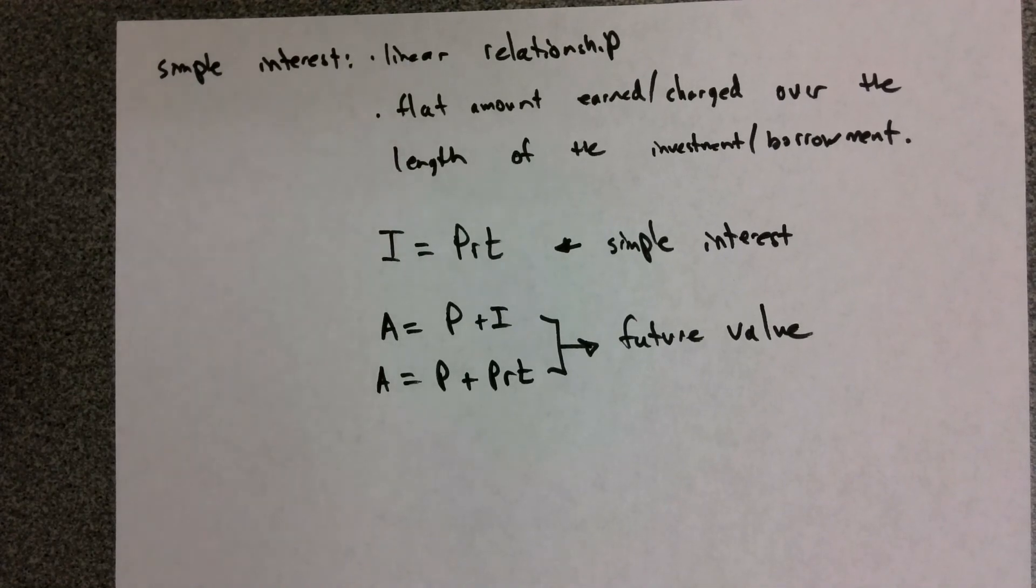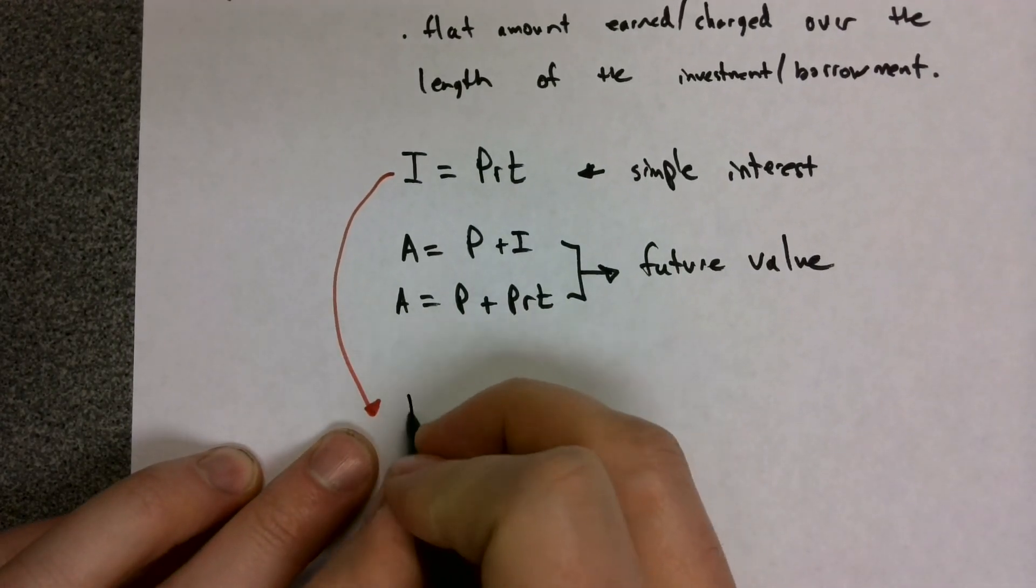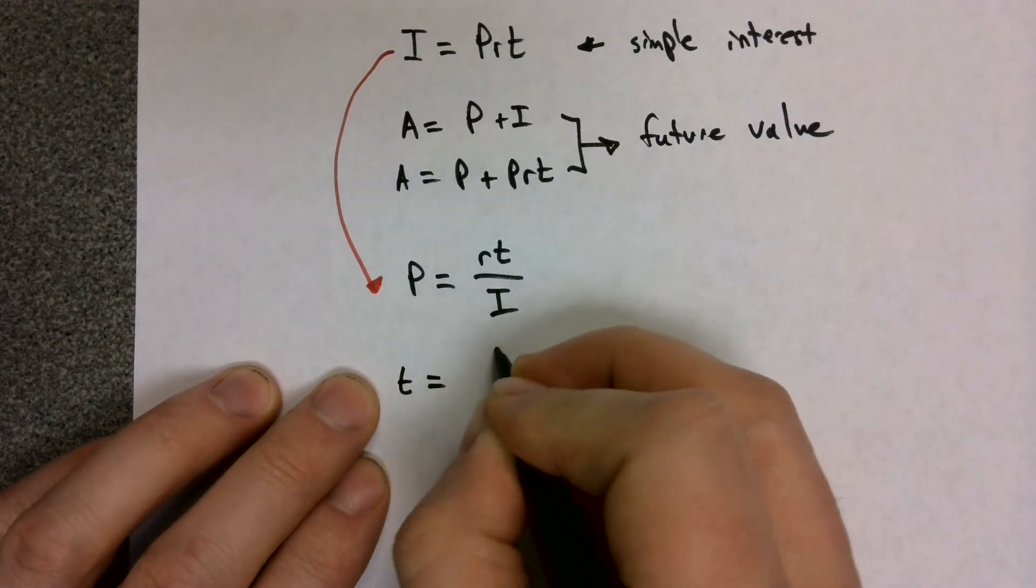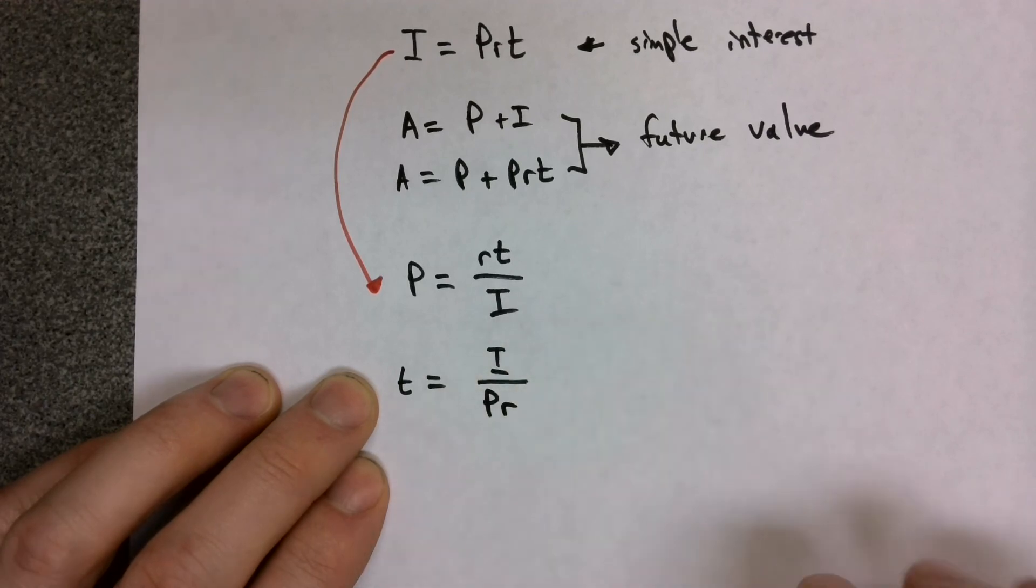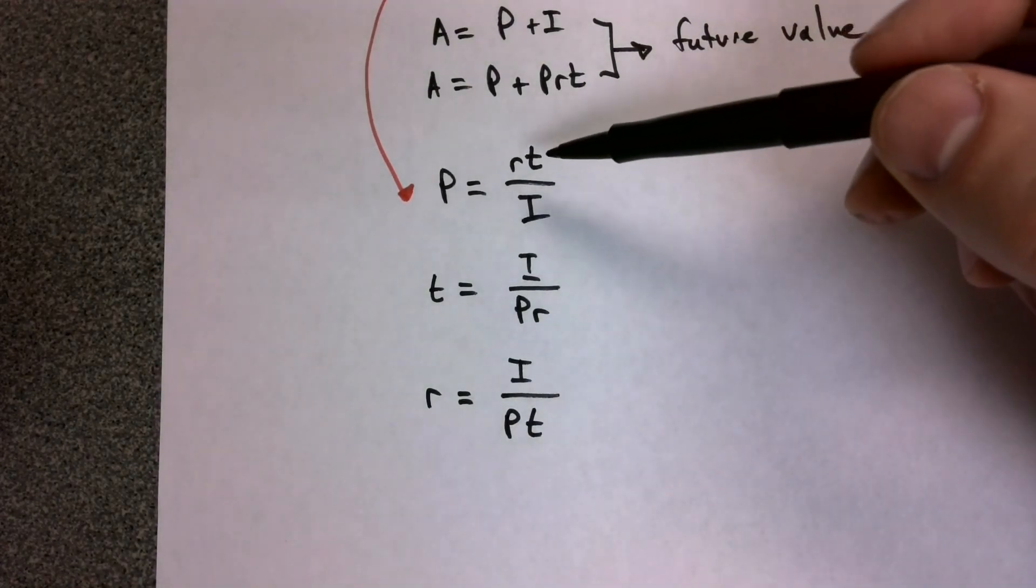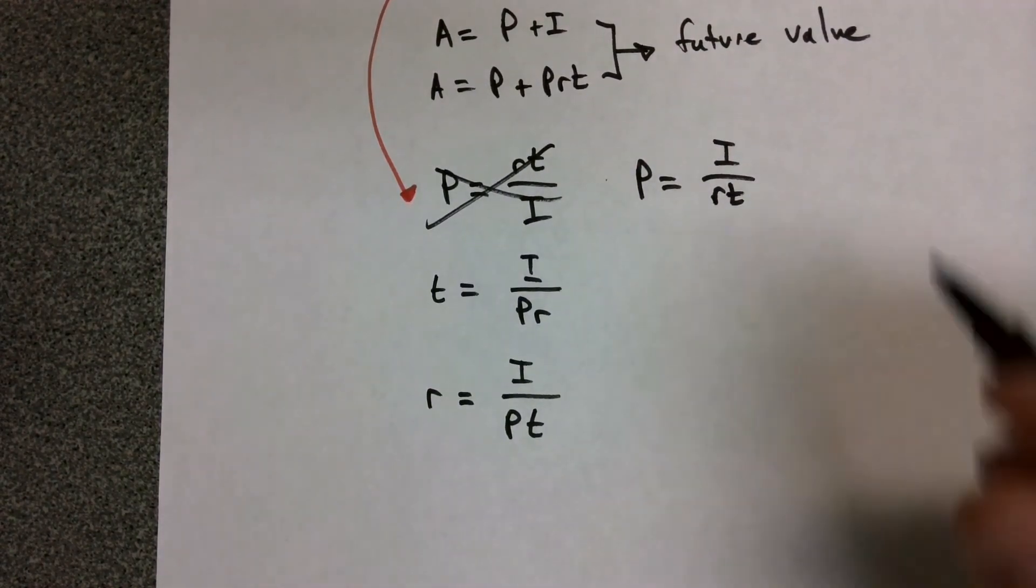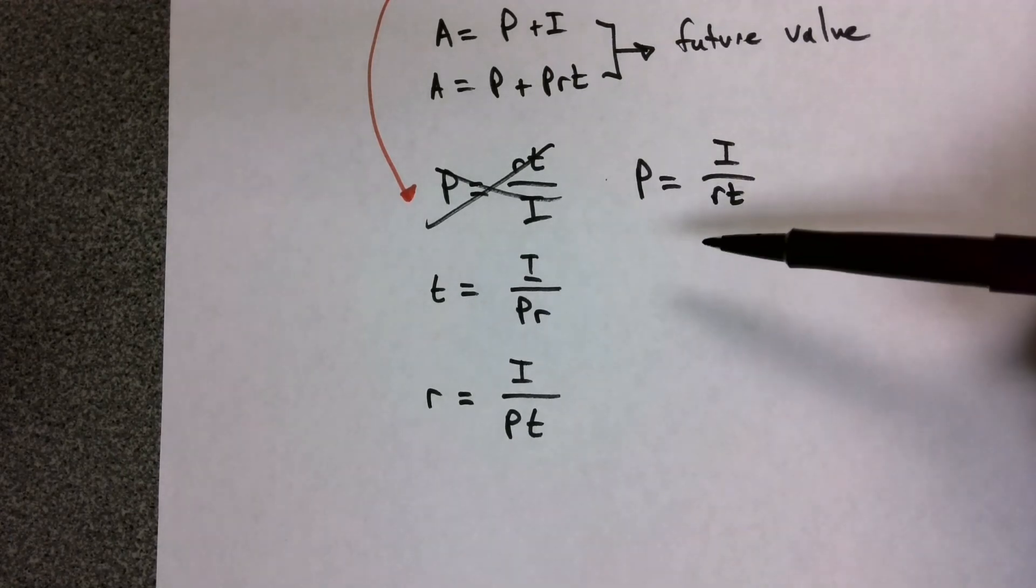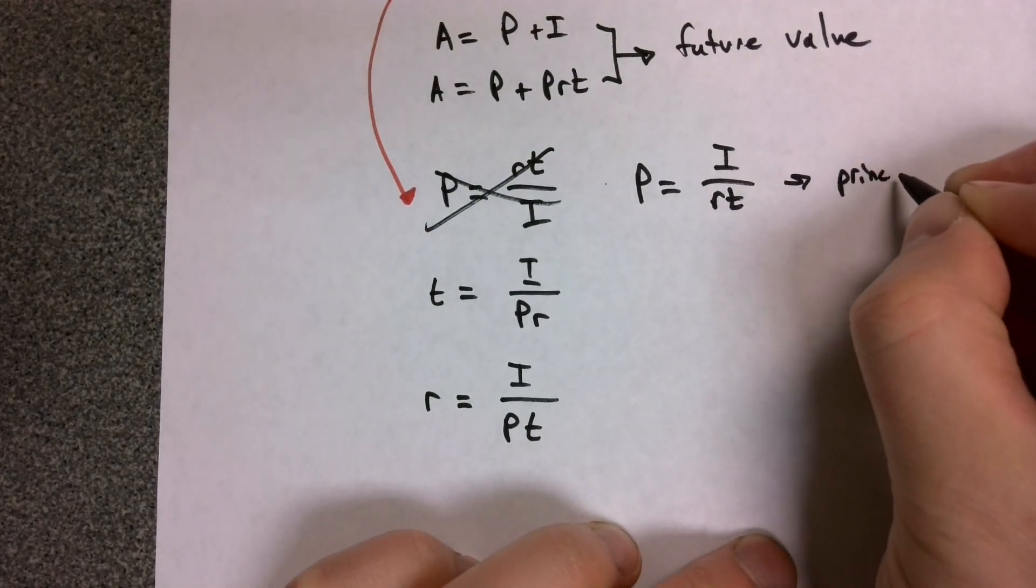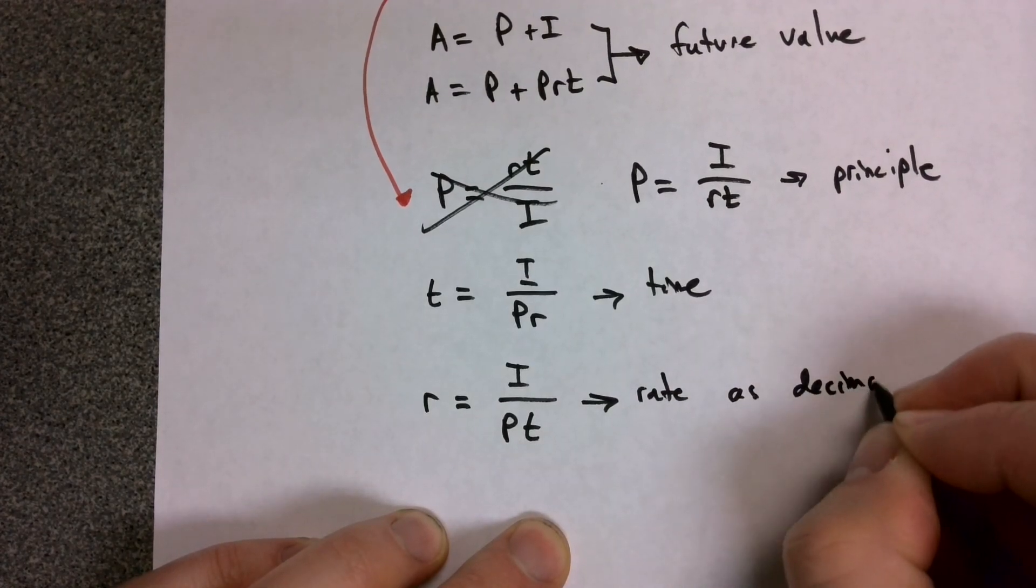We then took this simple interest formula and we actually solved for different parts. If we wanted to calculate the principle, we took the interest and divided it by the rate times the time. Or if we wanted to calculate the time, we took the interest and divided it by the principle times the rate. Or if we wanted to know the rate, we took the interest and divided it by the principle times the time. The principle is equal to the interest divided by the rate times the time. We solved for these in each case. If you prefer, you could use these formulas to calculate principle or time or rate as a decimal. Don't forget to multiply by 100.